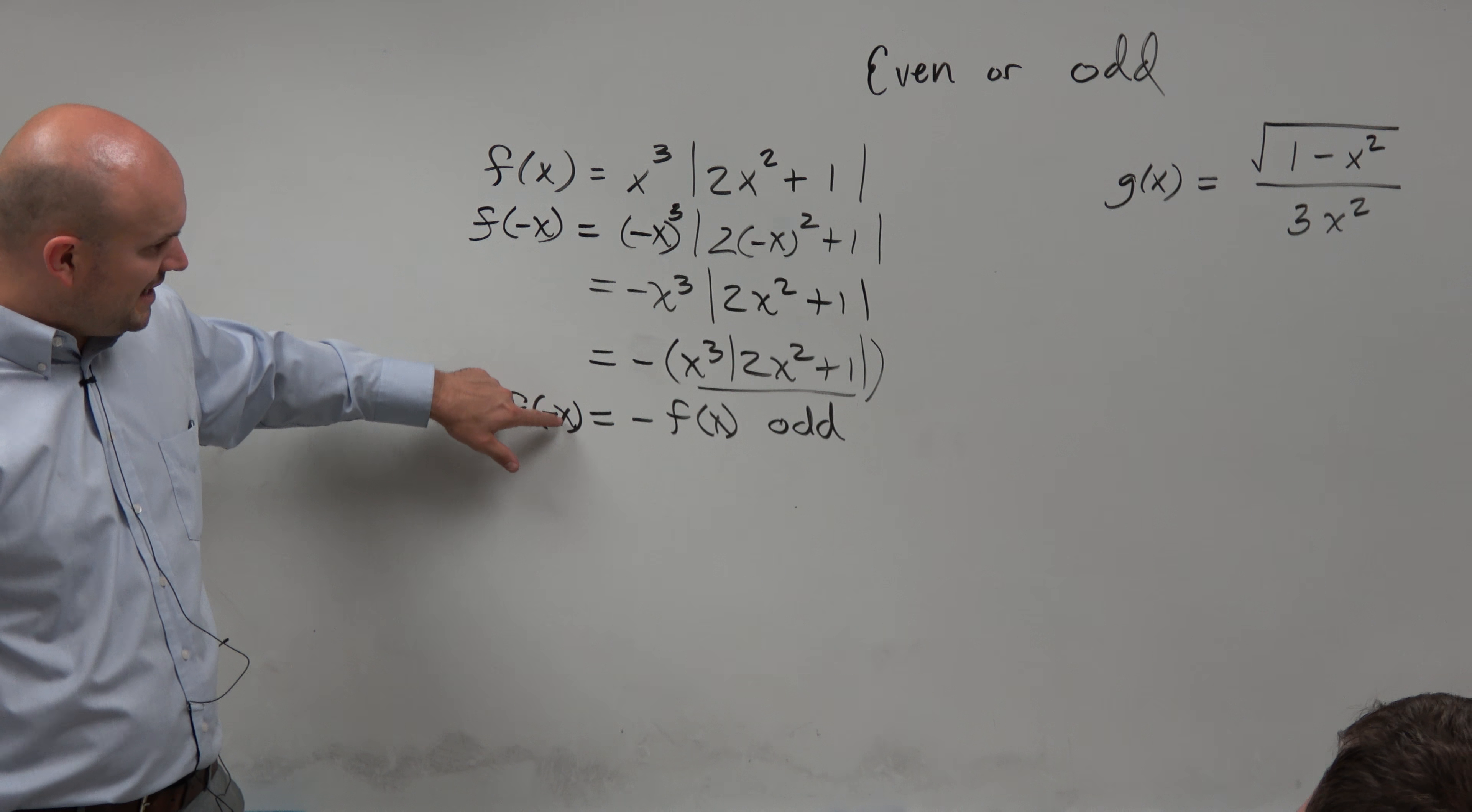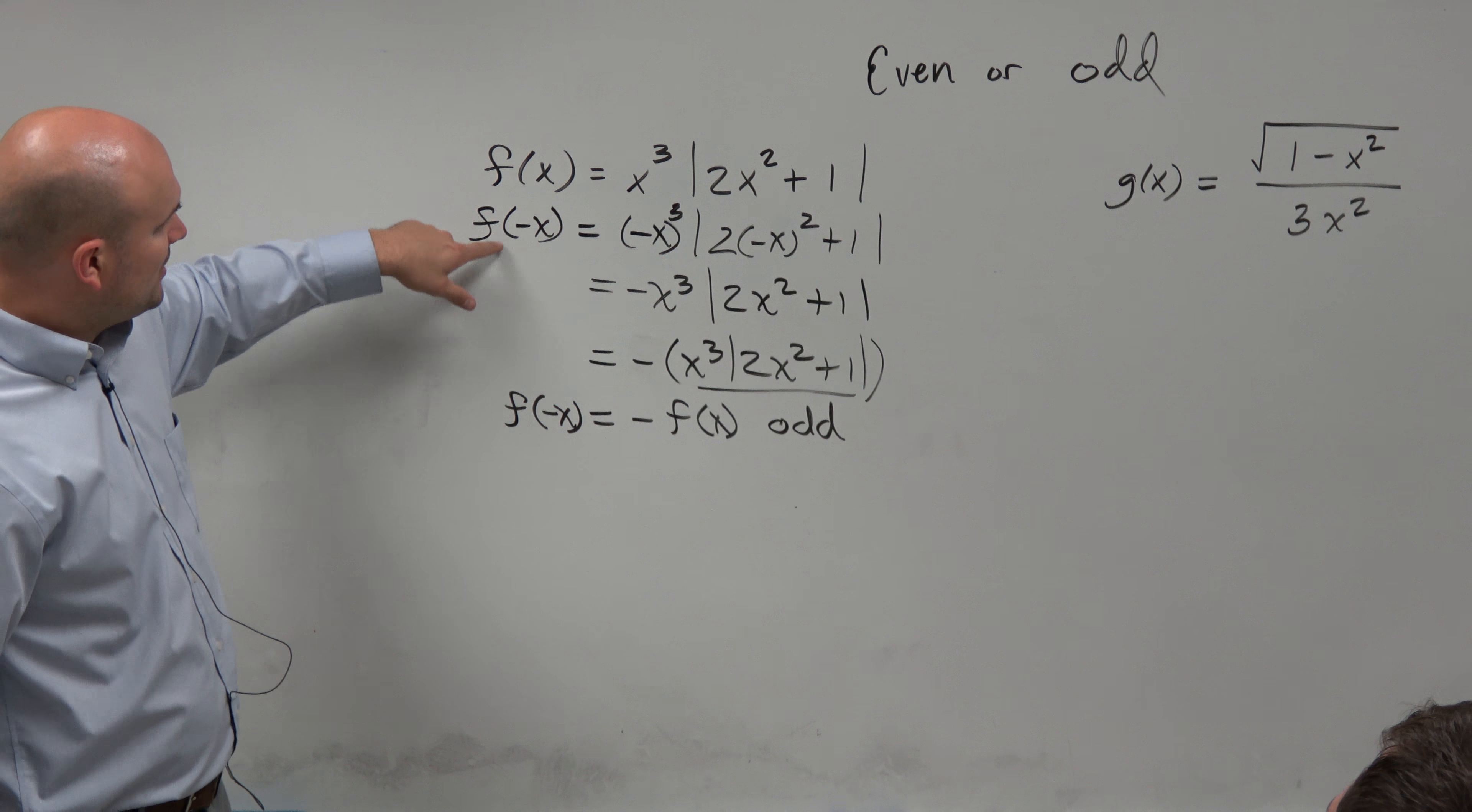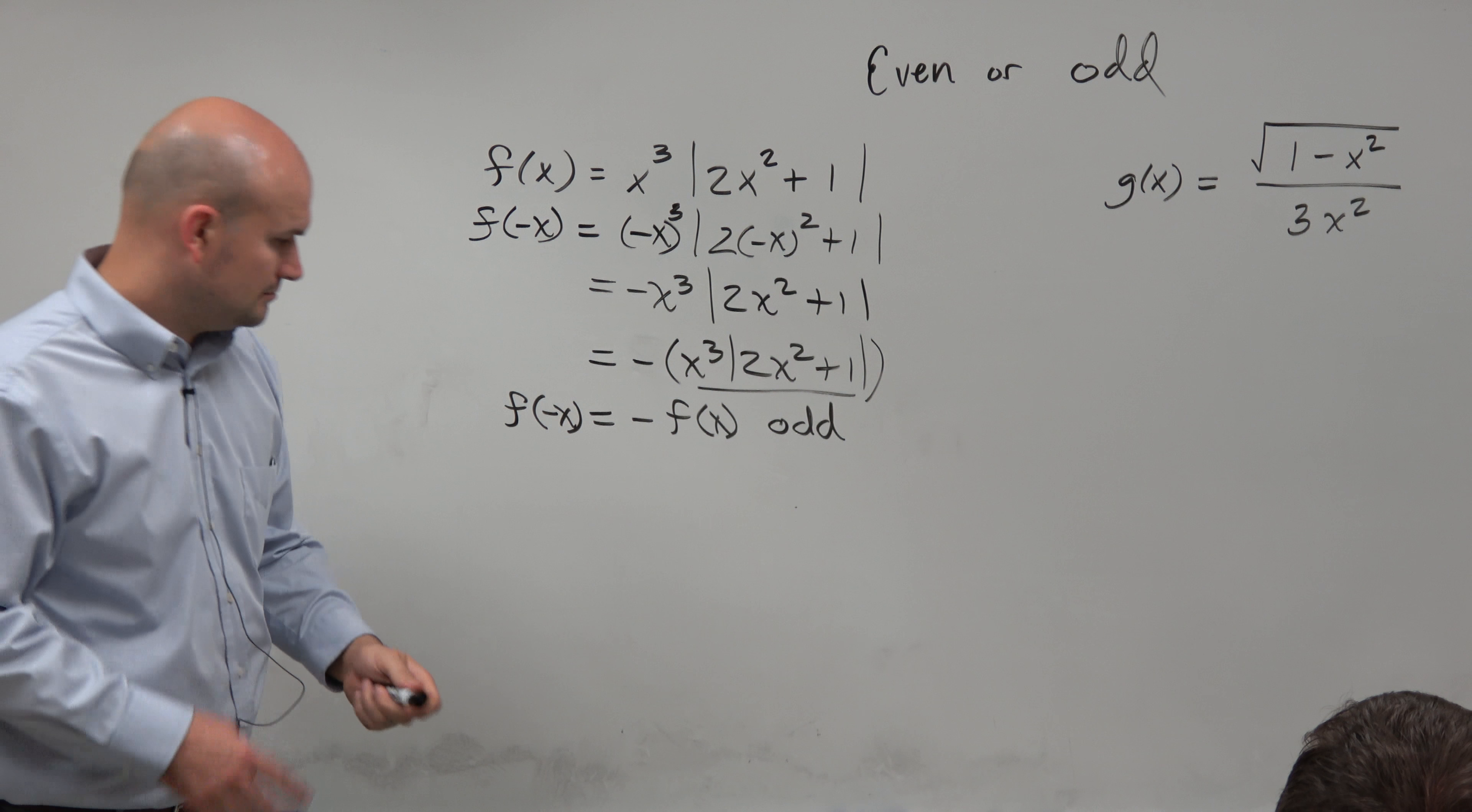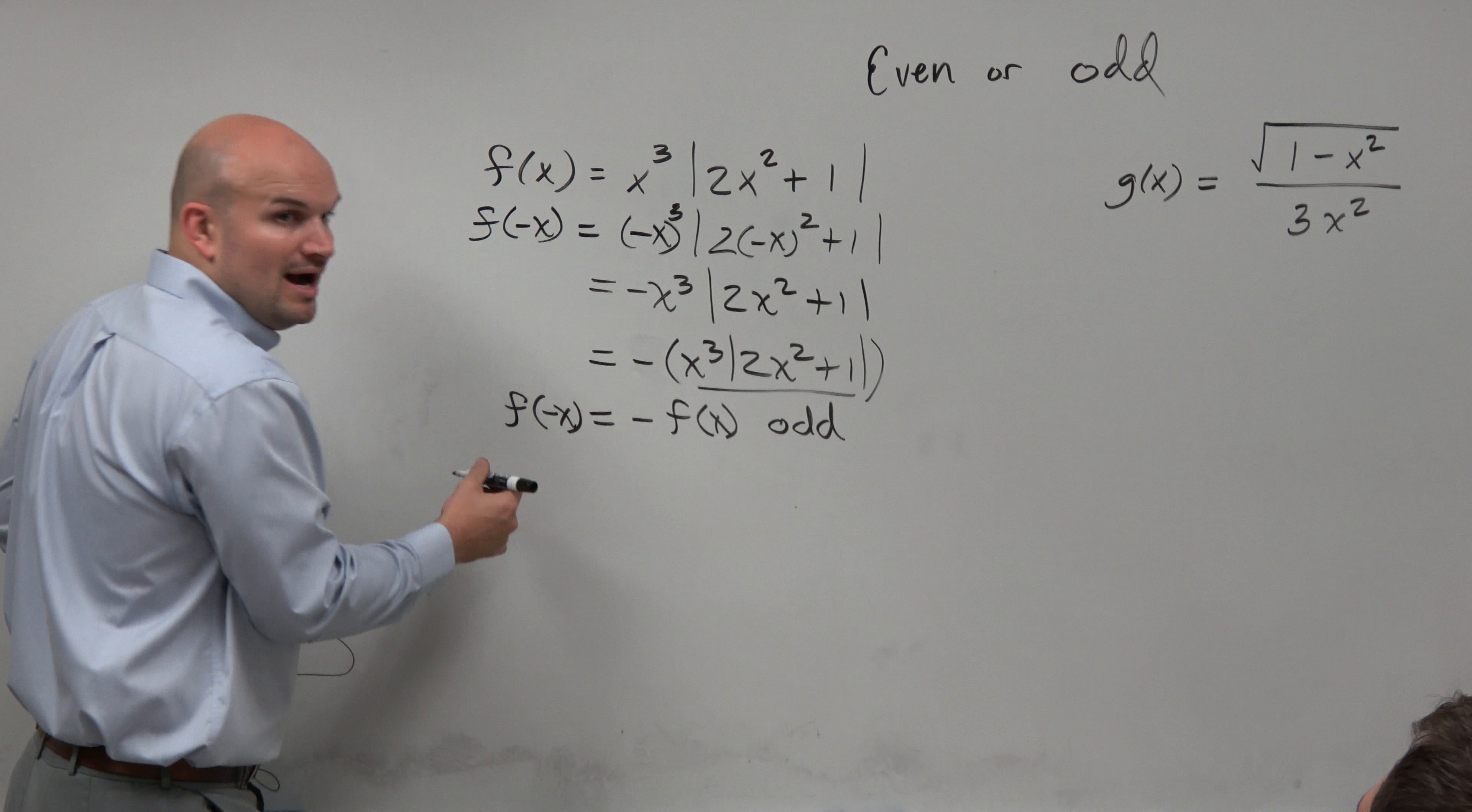If you plug in f of negative x and you get the opposite of that function, the function is odd. We plugged in negative x. We got the opposite of our original function. So if you get the opposite, it'll be odd. If you get the same, it'll be even? We'll get to that. But let's look at why that makes sense.